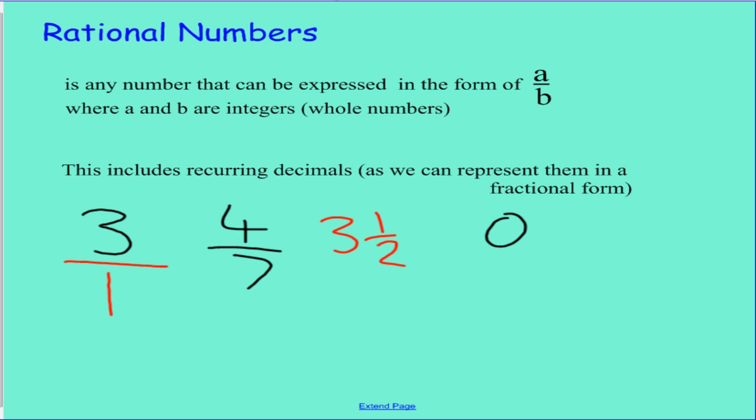So if we have something like 0.6 recurring, we know how to transform that into a fraction, so it can be represented as one whole number over another. So we're happy. All those are perfect examples of a rational number.